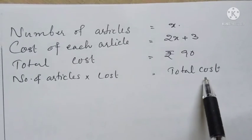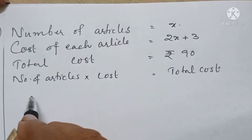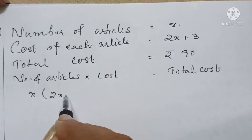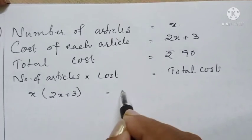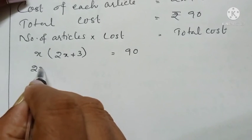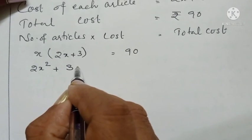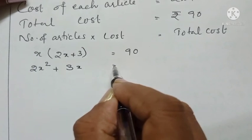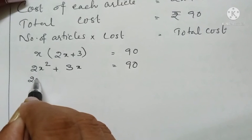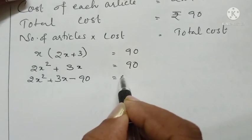Therefore, number of articles into cost of each article equals total cost. Writing it mathematically: number of articles is x, cost of each article is 2x plus 3, and total cost is 90 rupees. So x times (2x plus 3) equals 90. Expanding: 2x squared plus 3x equals 90, giving us 2x squared plus 3x minus 90 equals 0.